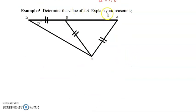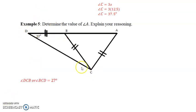So, next we're looking at example 5. Determine the value of angle A. We know that these lines here represent that these sides are congruent. So, if these sides are congruent, that means this is an isosceles triangle.